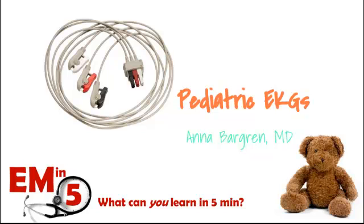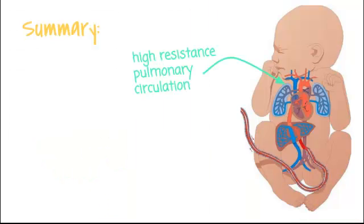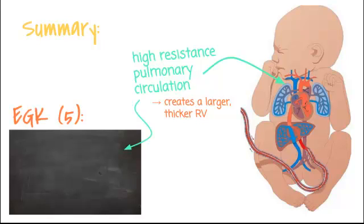Today we're going to talk about pediatric EKGs and what we would expect to see on a normal EKG. The key concept to keep in mind throughout all of this is RV dominant. That's because babies in utero tend to have a high resistance pulmonary circulation, which creates a thick, larger RV and results in the EKG changes that we see.